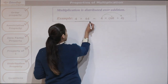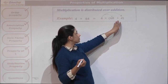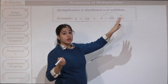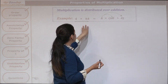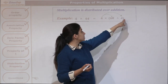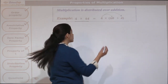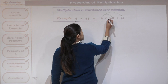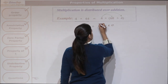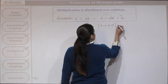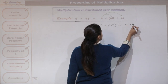Here we have 4 times 64. We have written 64 as 60 plus 4. Multiplication is distributed over addition — this is what is shown by the arrows. We will solve this: first, 4 times 60, then plus 4 times 4.